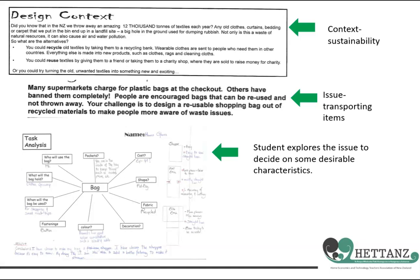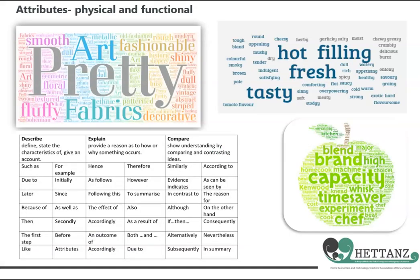In this example we have a context of sustainability and an issue of transporting items. The student has started by exploring the issue, undertaking a task analysis, so they can clarify their own understanding of what they have to do and identify some desirable characteristics or attributes to consider further. Attributes are the general characteristics or aspects of the physical and functional nature of a technological outcome — physical refers to what it looks like, and functional refers to how it works. Specifications define the actual requirements of the physical and functional nature of the outcome in more detail and in a way that is measurable.